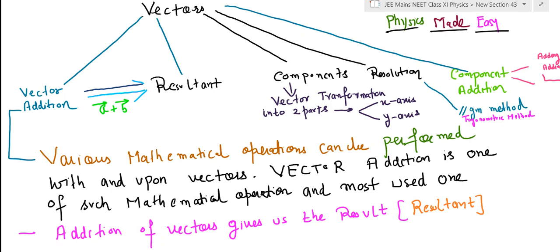The word resultant comes from result. So if you have five forces, the result of these five forces which is obtained with the help of vector addition is called resultant. Let's talk about the third part of this series, which is components.